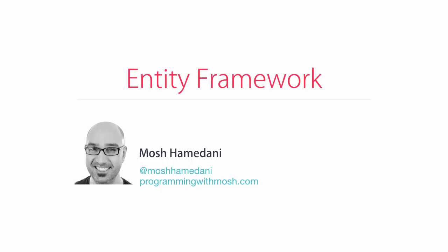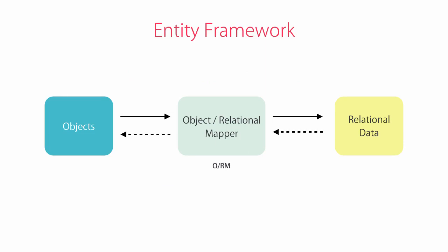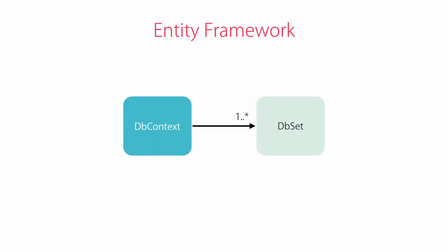Entity Framework is a tool we use to access a database. More accurately, it's classified as an object relational mapper, or ORM, which means it maps data in a relational database into objects of our applications. In the old days before Entity Framework, we had to do this mapping manually, which involved opening a connection to the database, executing a command, reading the data, and remembering to close the connection. With an ORM, we don't have to do this anymore, so we work at a higher level of abstraction.